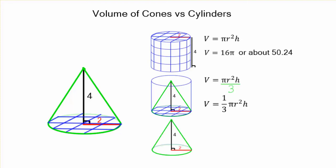So with our final cone, it's going to be 16 pi divided by three, or about 50.24 divided by three. And when you divide that out, you're going to get approximately 16.75. So remember, you just take the area of the base times the height and divide by three for the volume of a cone.